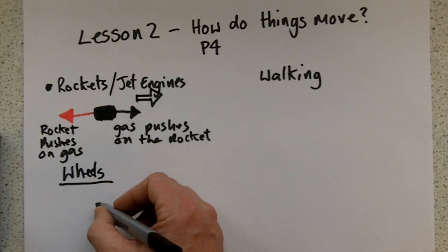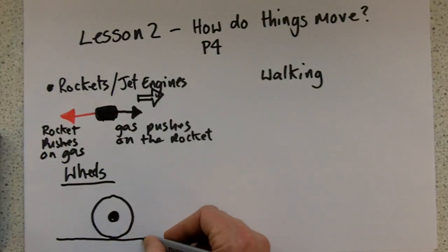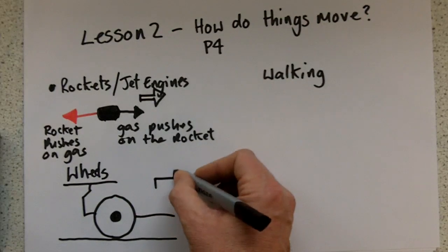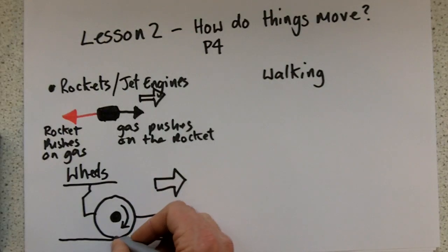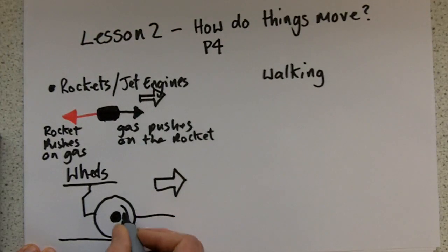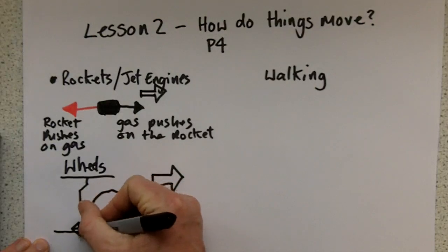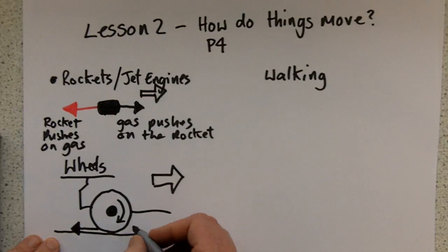For wheels, either on a bike or a car — here's my wheel on my vehicle. If I want to go in this direction, then my wheels are going to turn in this direction. Because of the grip or friction between the tyre and the floor — and we'll be looking at friction in the next video — the floor and the tyre interact with each other. The tyre is trying to push the floor backwards, so the wheel pushes the floor backwards. Because an interaction pair is created, the floor then pushes the wheel forwards.